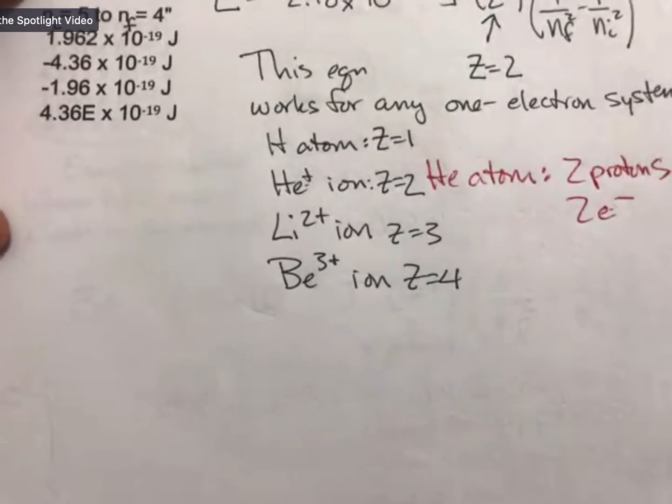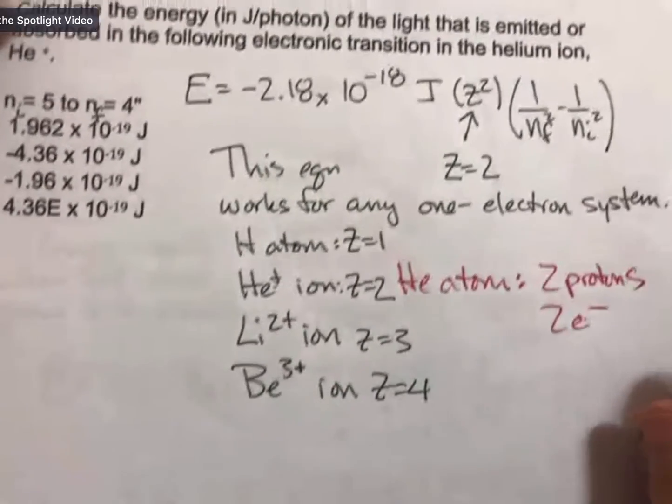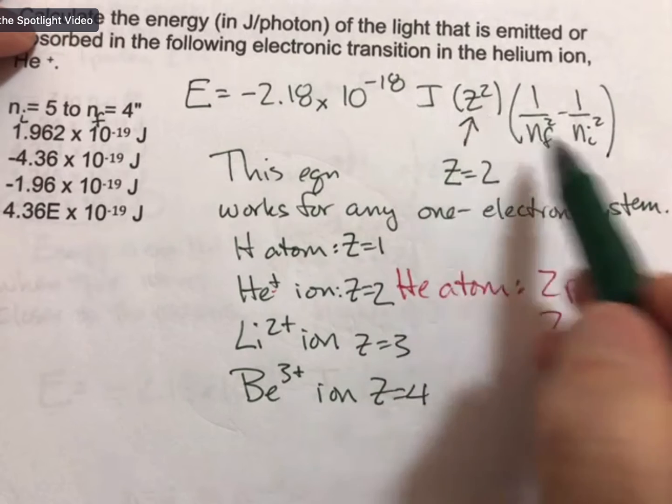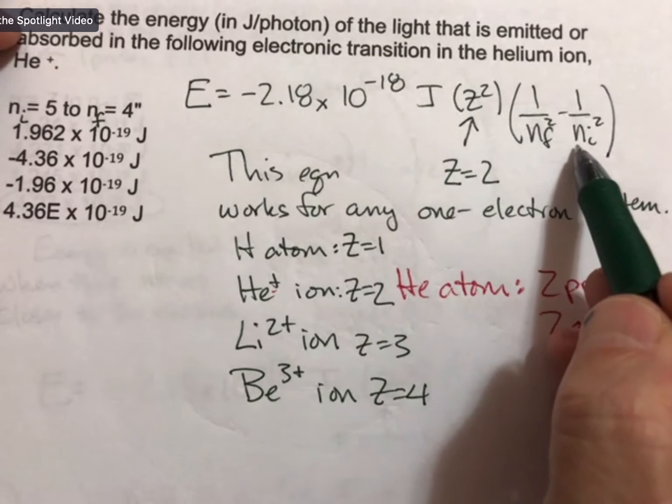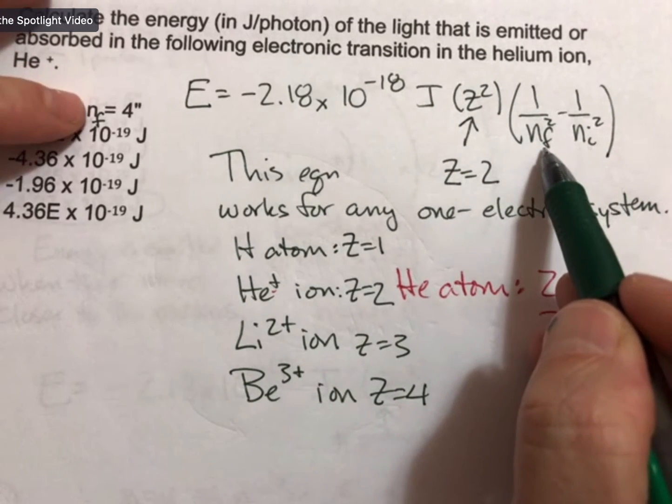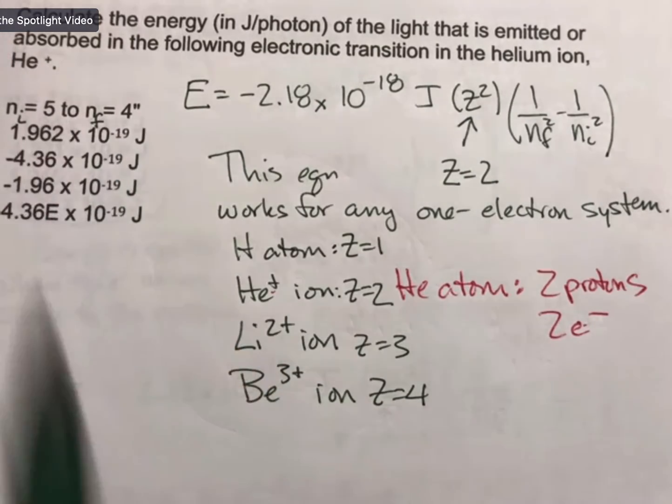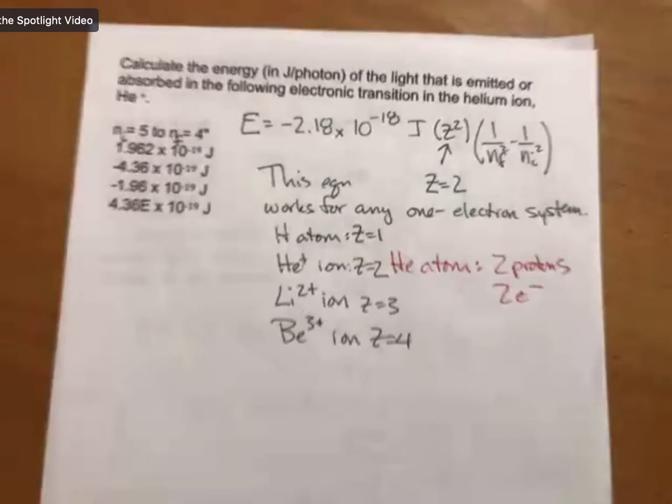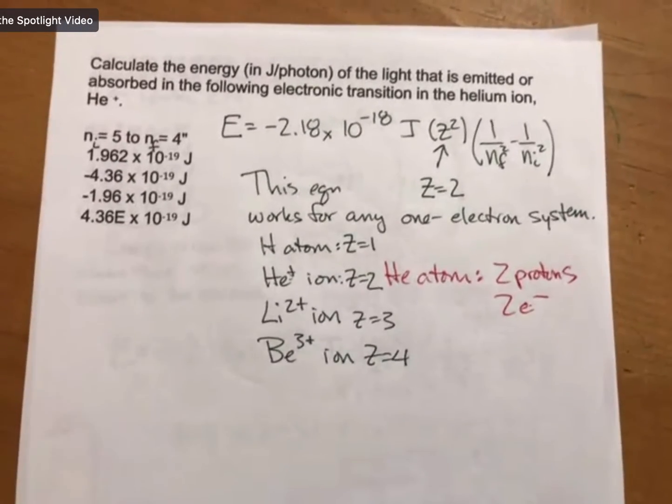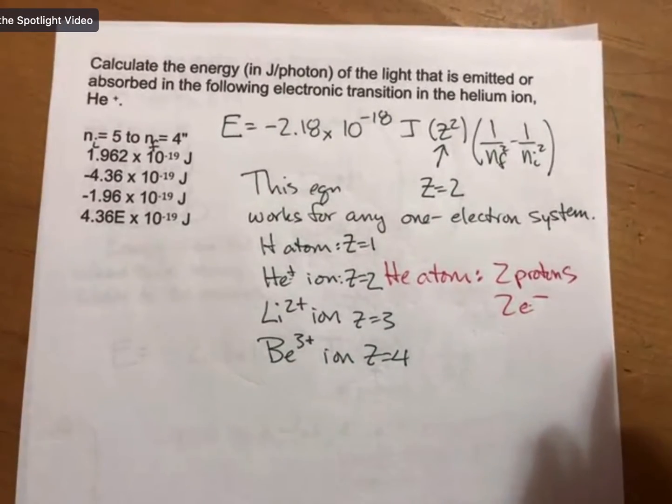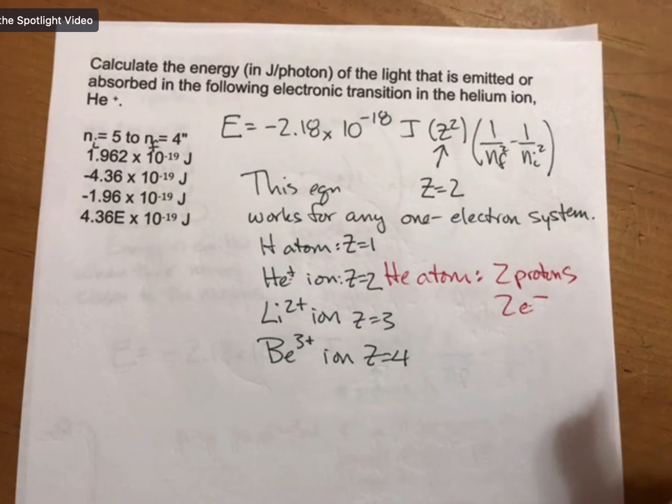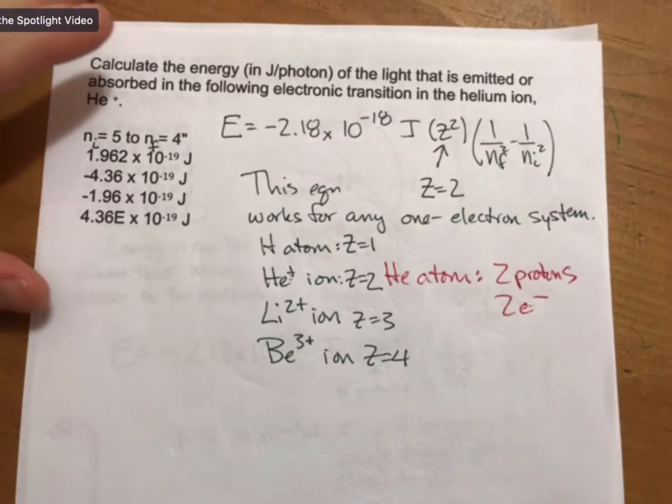But otherwise, the only thing that happens differently, so now we have z equals 2 for this one. We know how to plug these in for n initial and n final. We're moving from 5 to 4, so we're moving closer to the nucleus. As you move closer to the nucleus, you will have a negative energy because energy will be emitted, and you're moving from a higher to a lower energy position.